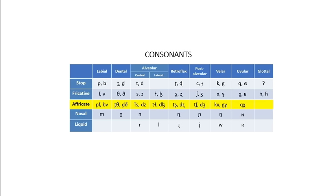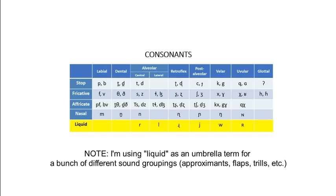an affricate, produced by initially obstructing airflow in the same manner as a stop before releasing it in the same way as a fricative, a nasal, produced by letting some air pass through the nose, or a liquid, produced by slightly changing the contour of the unrestricted airway.